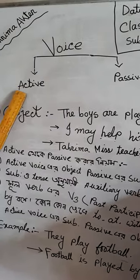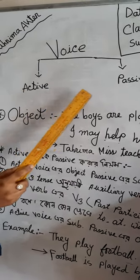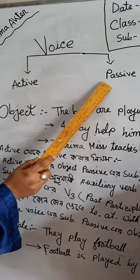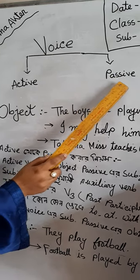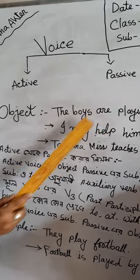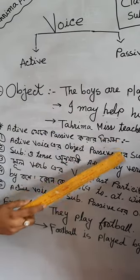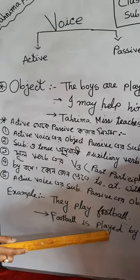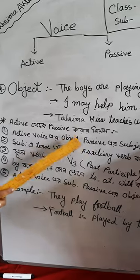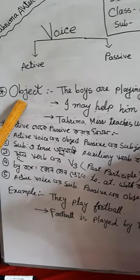In active voice, the subject performs the action directly. In passive voice, the object is cast as the subject. This is the basic idea of what active and passive voice mean.